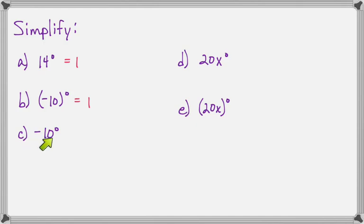Here, the base is 10, because the negative is not in parentheses, the negative is not being affected by this exponent. So the negative will stay, and 10 to the 0 is 1.